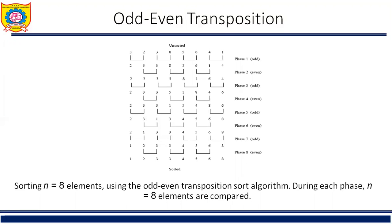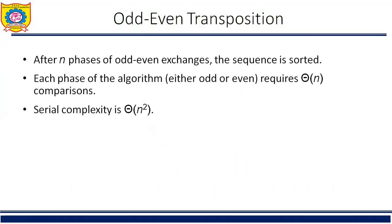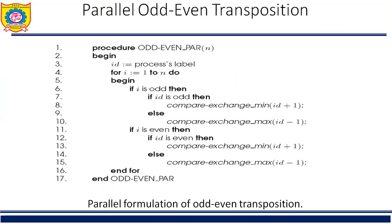Consider the one-element-per-process case. Let N be the number of processes, also the number of elements to be sorted. Assume that the processes are arranged in a one-dimensional array. Element Ai initially resides on process Pi for i equal to 1 to N. During the odd phase, each process with an odd label performs a compare-exchange of its element with the element on its right neighbor. Similarly, during the even phase, each process with an even label performs a compare-exchange with the element of its right neighbor. This parallel formulation is given in the algorithm shown here — the parallel formulation of odd-even transposition on N processes. During each phase, odd or even processes perform compare-exchange steps with their right neighbors, which requires time O(1).